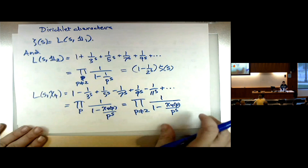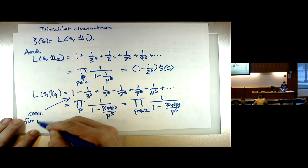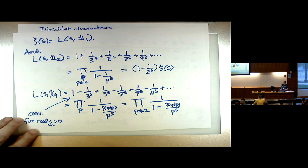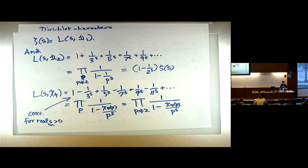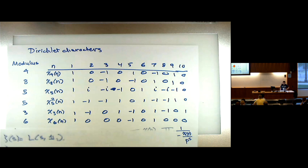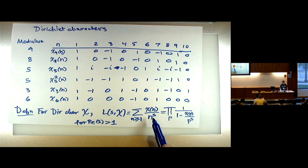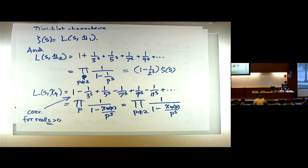However, if you look at the series representation, this actually converges for real s > 0 by the alternating series test. So the series actually converges on a wider domain than we initially expected. If you want absolute convergence, this won't converge absolutely when the real part of s ≤ 1, but the series as written converges for s real greater than 0.